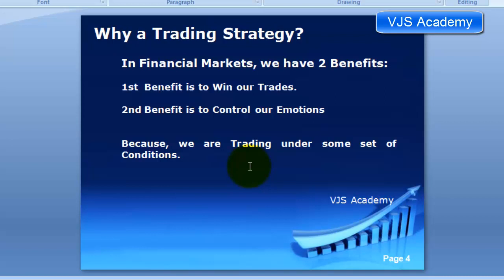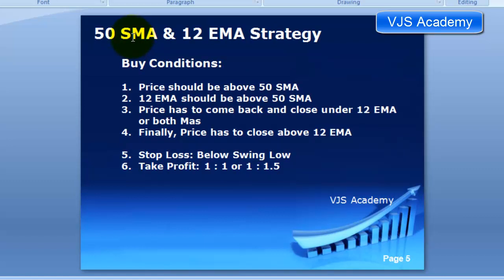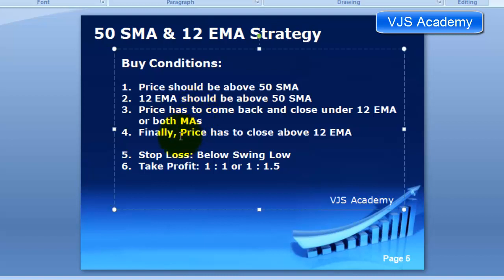For example, let me explain a simple strategy — the 50 SMA and 12 EMA strategy using two moving averages. If you want to buy: first, price should be above the 50 SMA; second, the 12 EMA should be above the 50 SMA; third, price has to come back and close under the 12 EMA or both moving averages; and finally, price has to close above the 12 EMA. Stop loss is below the swing low and take profit is a 1:1 or 1:1.5 risk-reward ratio.